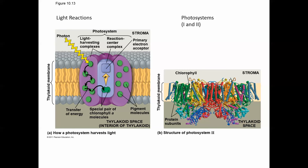The light cycle uses structures called photosystems, which are collections of different enzymes and pigments including chlorophyll and carotenoids. Part of the photosystem acts like an antenna — the light harvesting complex — which gathers light energy and transfers it from one molecule to another, eventually transferring it to a special pair of chlorophyll A molecules called the reaction center. Those special chlorophyll A molecules become highly excited and actually lose electrons that go to a primary electron acceptor.